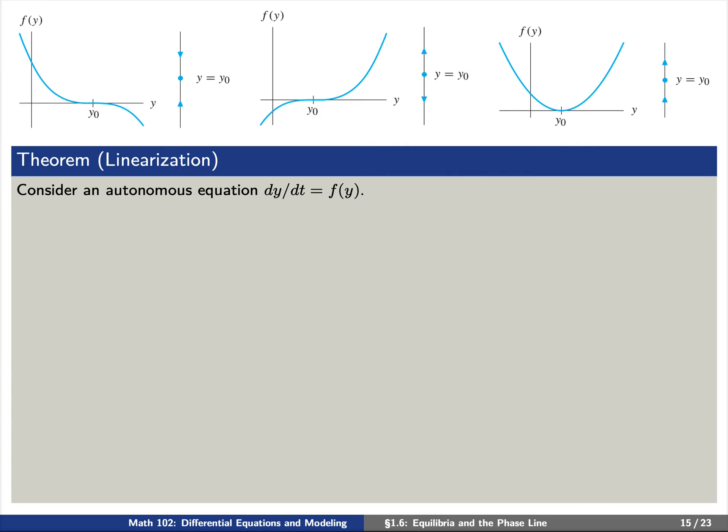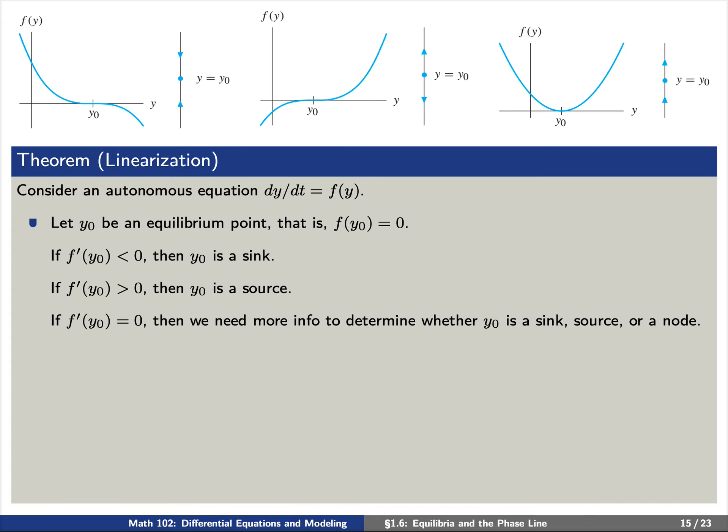We'd like to present a theorem that explains why all of this is useful. Consider an autonomous equation dy/dt equals f(y), and let y₀ be an equilibrium point. If the derivative f'(y₀) is negative, then y₀ is a sink — the graph of f is decreasing at y₀. If f'(y₀) is positive, then y₀ is a source — the graph of f is increasing at y₀. And finally, if f'(y₀) equals 0, then we need more information to determine whether y₀ is a sink, a source, or a node.